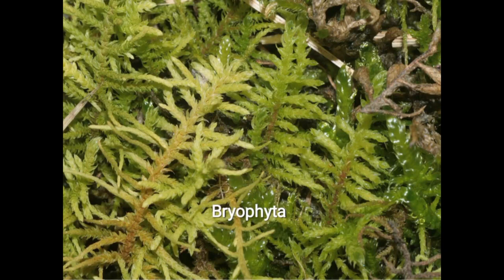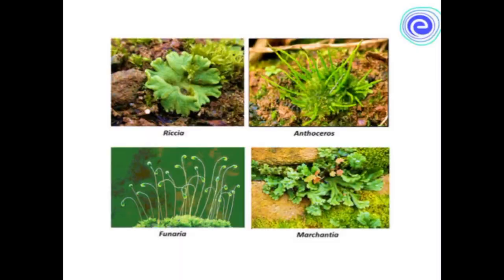Bryophyta plants are the plants of the amphibian group. Bryophyta plants can be differentiated to form stem and leaf-like structures. Examples of Bryophyta plants are Rysia, Anthoceros, Funaria and Marchantia.